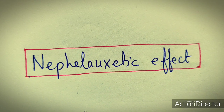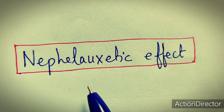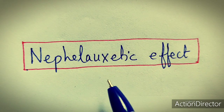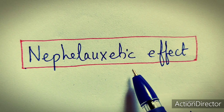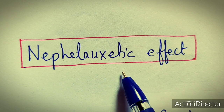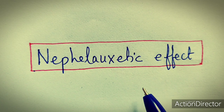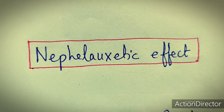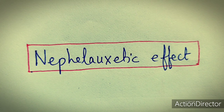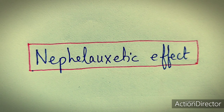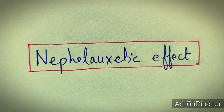Dear students, now we will discuss about the nepheloxetic effect. After studying about Racah parameters, we can move to the nepheloxetic effect. We have already studied that Racah parameters — the inter-electronic repulsion parameters — become lower in the case of complexes as compared to the metal ion. B' is the Racah parameter for the complex ion and B is the Racah parameter for the free metal ion. So why is this inter-electronic repulsion reduced after complex formation? That will be covered in the topic of the nepheloxetic effect.